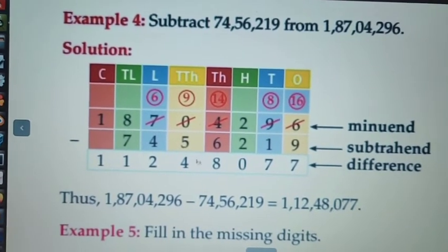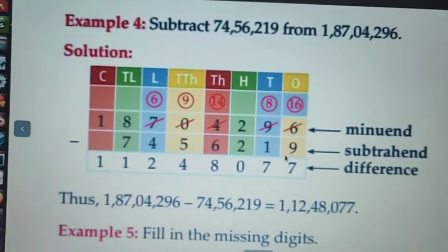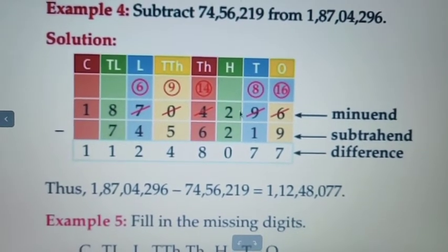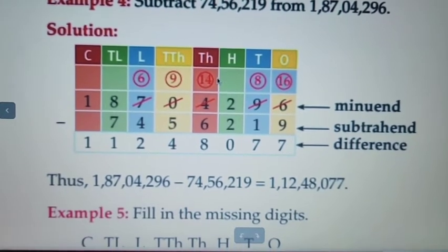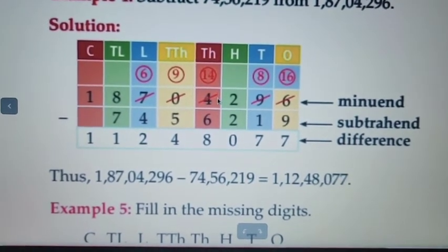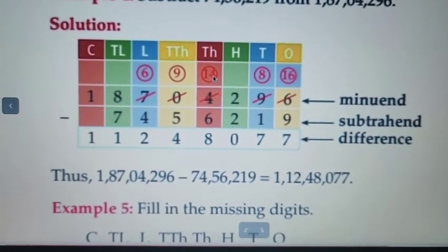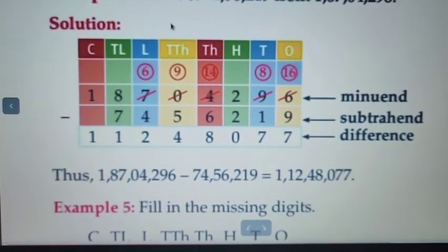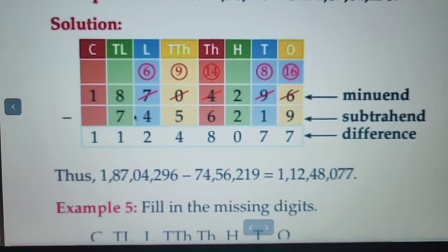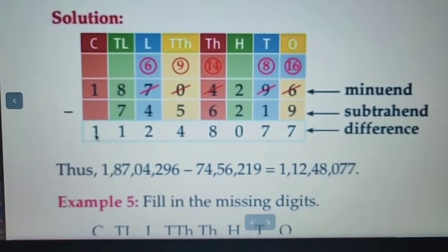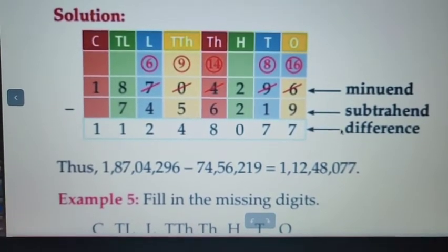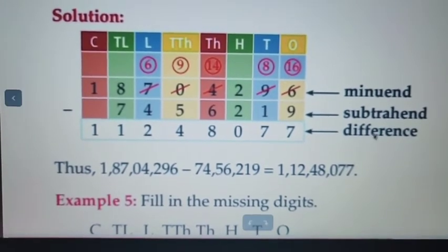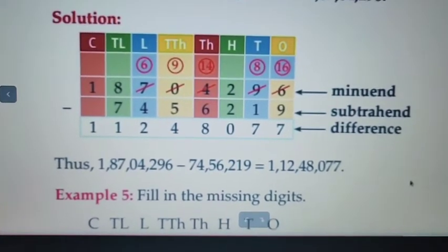See the answer: 16 minus 9 is 7, 8 minus 1 is 7, 2 minus 2 is 0, 14 minus 6 is 8, 9 minus 5 is 4, 6 minus 4 is 2, 8 minus 7 is 1, and 1 same 1 downside. So this answer is called the difference.